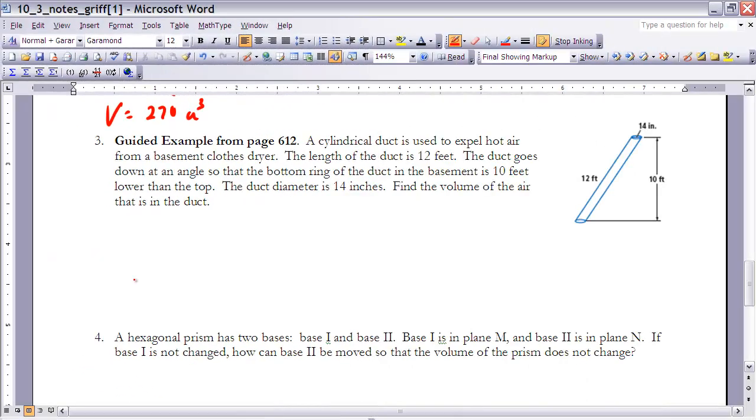So let's take a look at example 3 here. It's actually the guided example from page 612 in your book, if you want to take a look at that one as well. It says a cylindrical duct is used to expel hot air from the basement clothes dryer. The length of the duct is 12 feet. The duct goes down at an angle so that the bottom ring of the duct in the basement is 10 feet lower than the top. The duct diameter is 14 inches. Now, we've got to be careful with that. 14 inches. Notice how these other things are in feet and this is in inches. Find the volume of air in the duct.